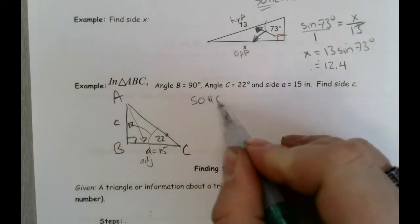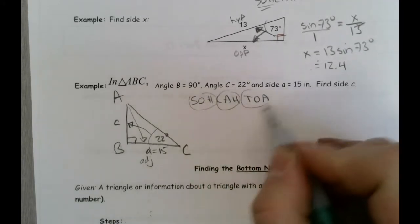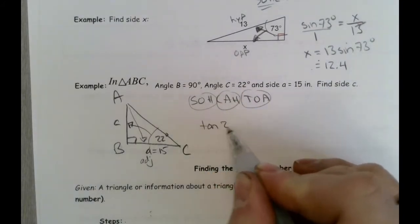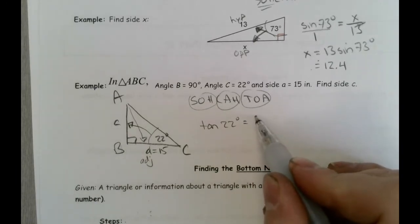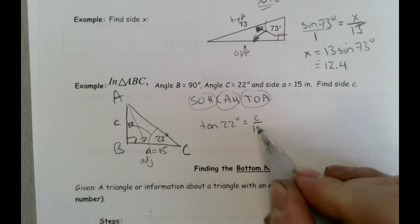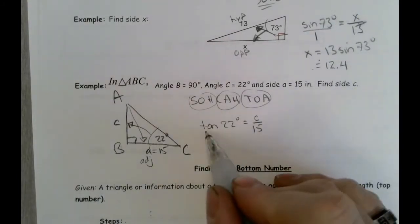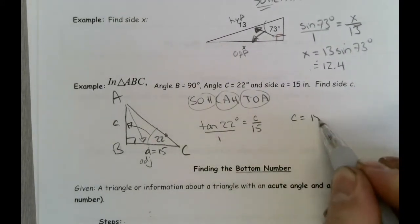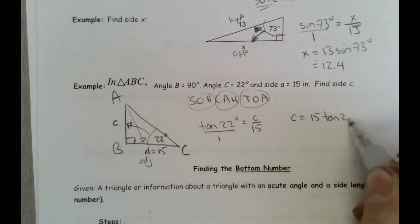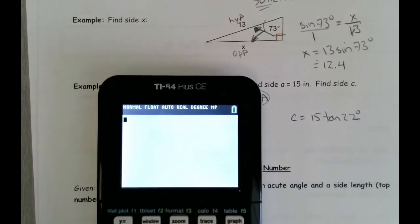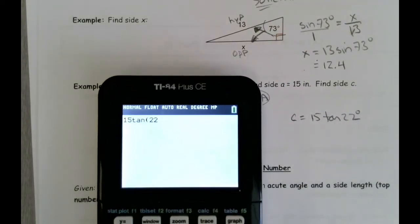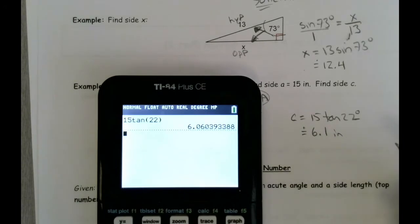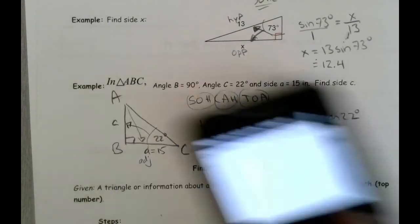What trig function puts together opposite and adjacent? The answer is tangent. So the tangent of 22 degrees equals the opposite side, little c, over the adjacent side, which I know is 15. Writing tangent over 1 and cross-multiplying: c equals 15 times the tangent of 22 degrees, which gives approximately 6.1 inches.